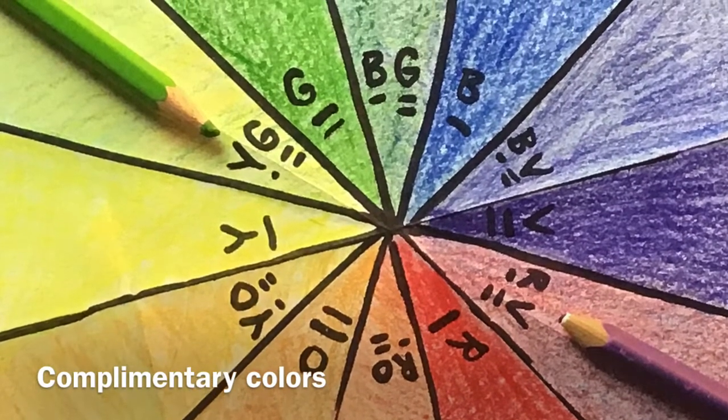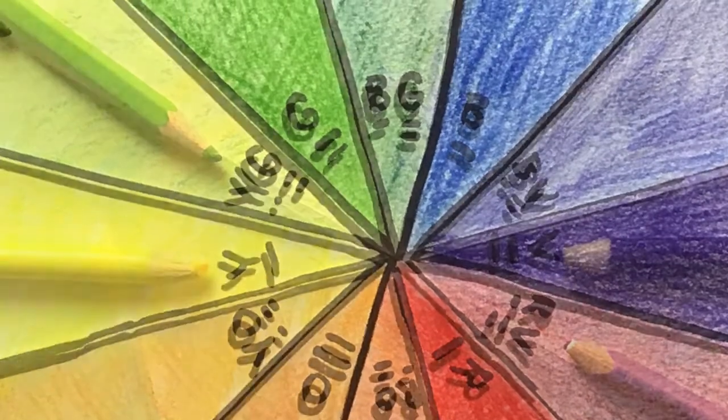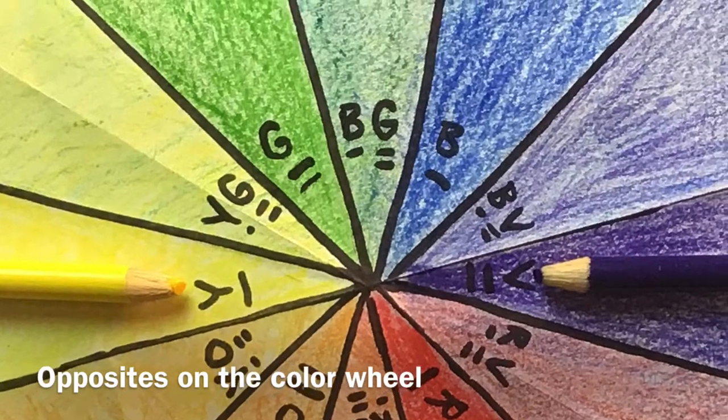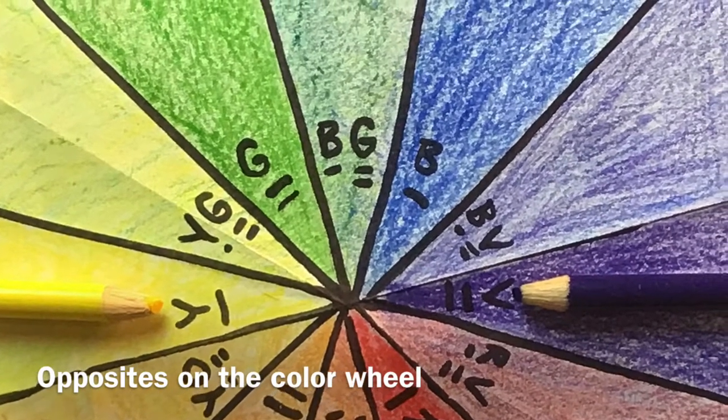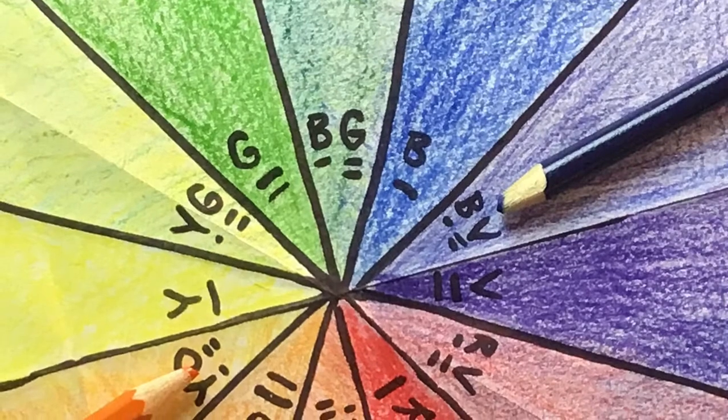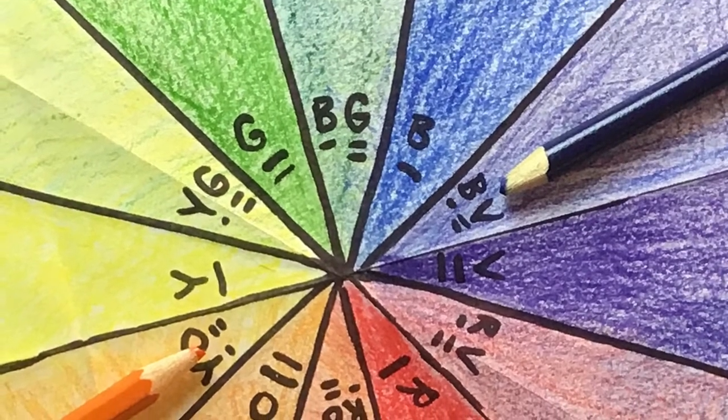So today we'll be talking about complementary colors and those are colors that are opposites on the color wheel. You see a couple examples here and you just need to pick the two colors that are opposites that you like the most.